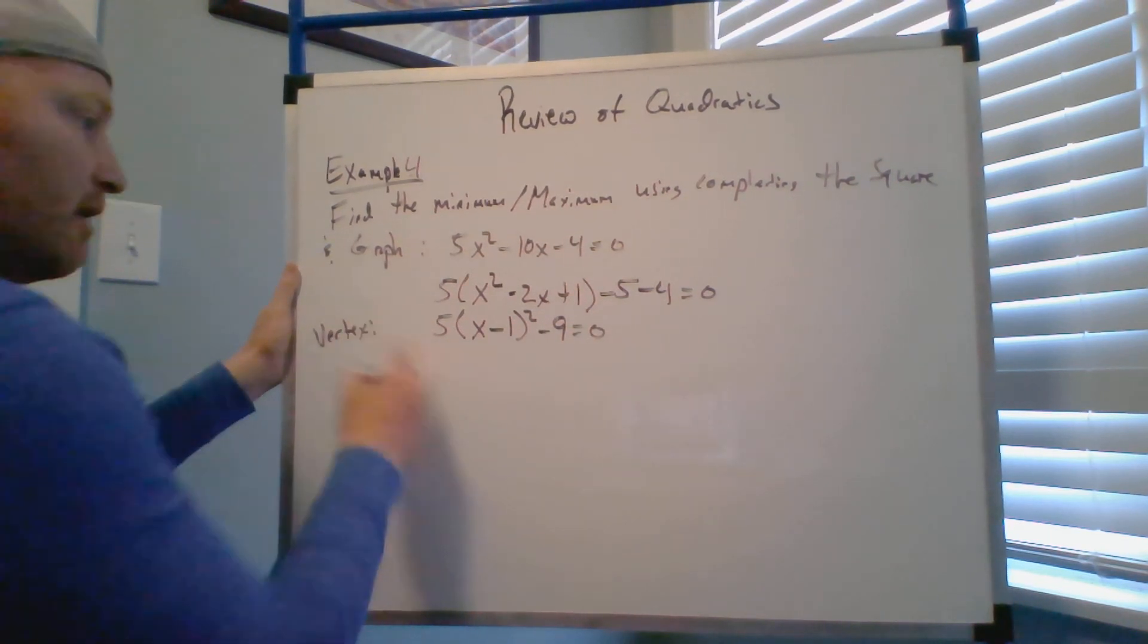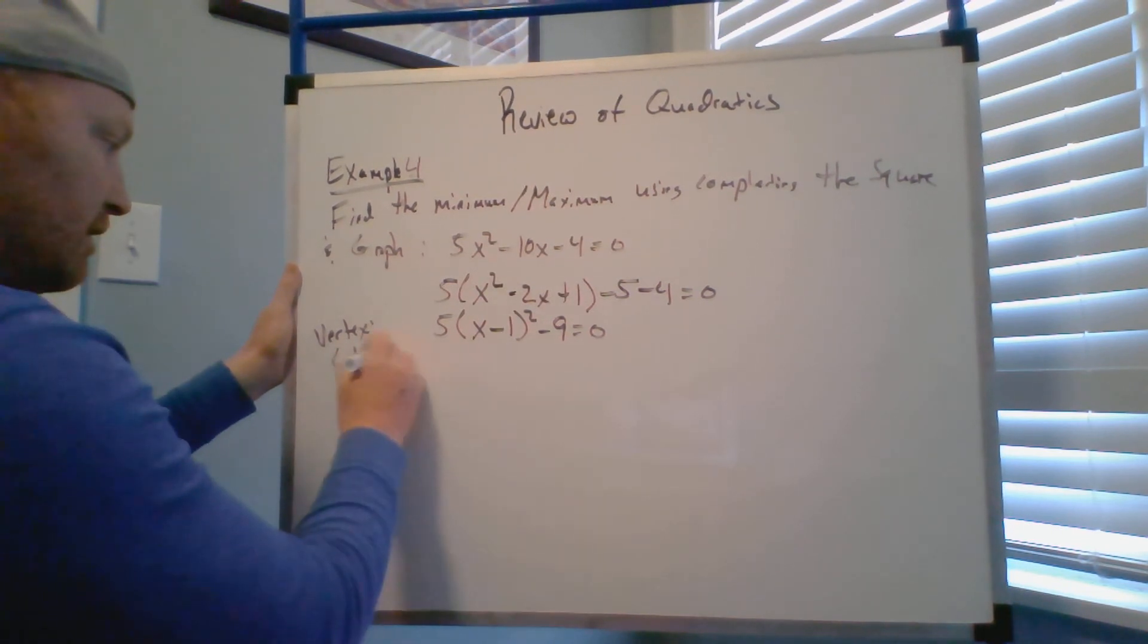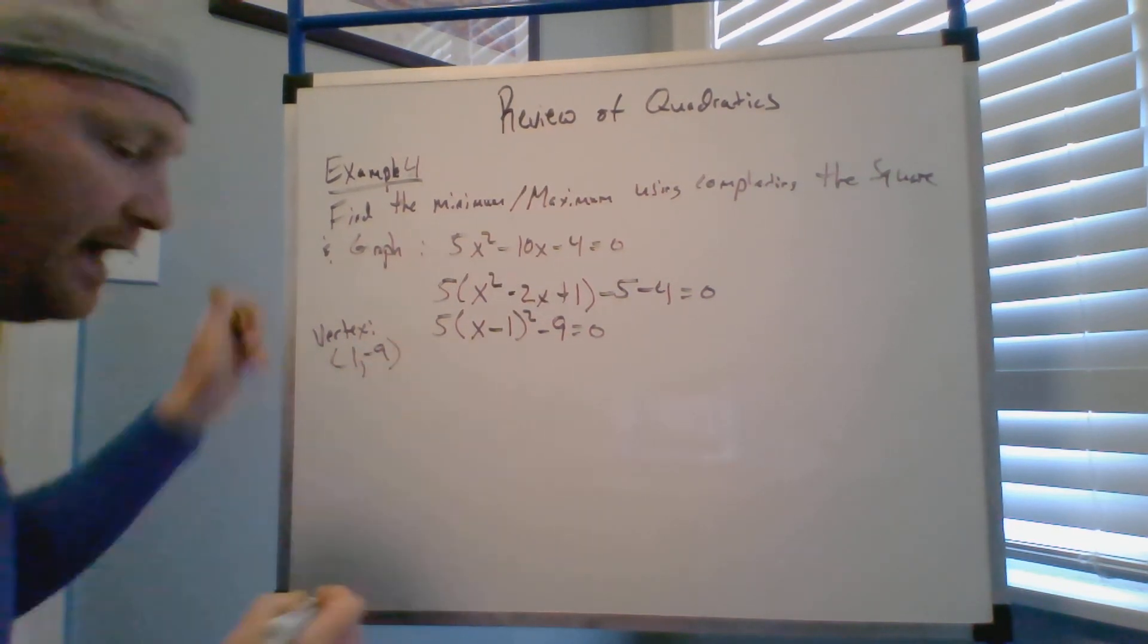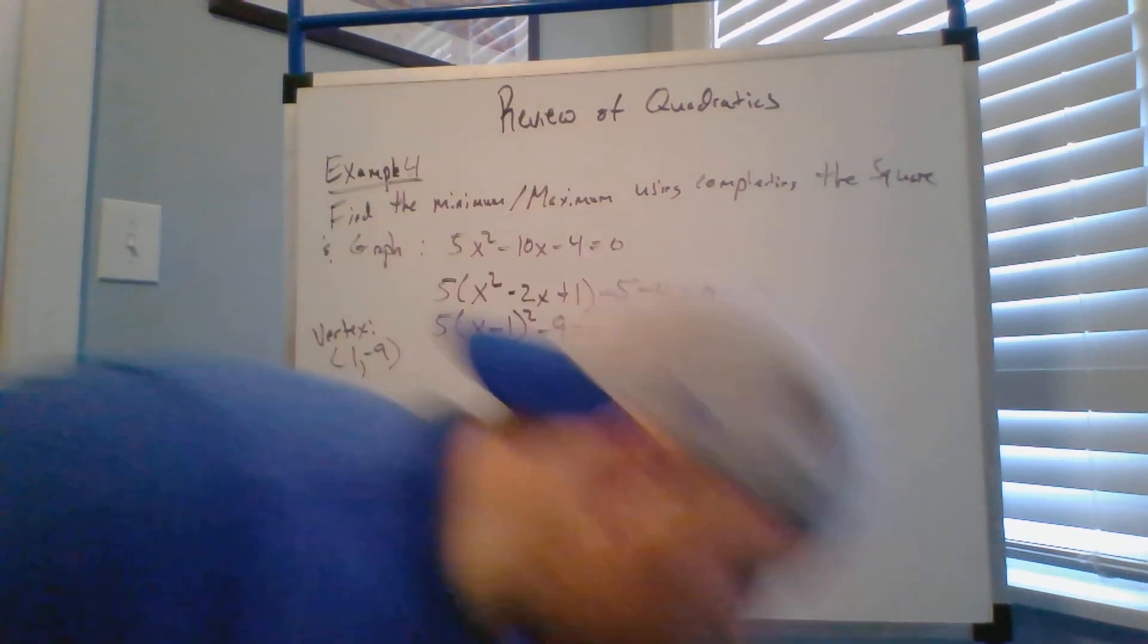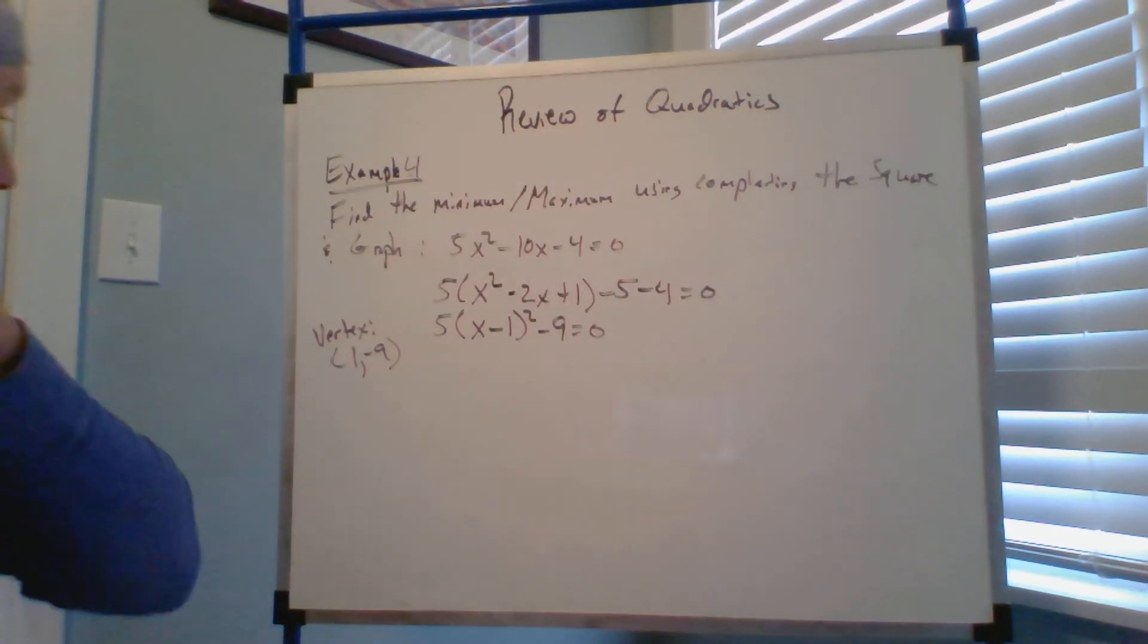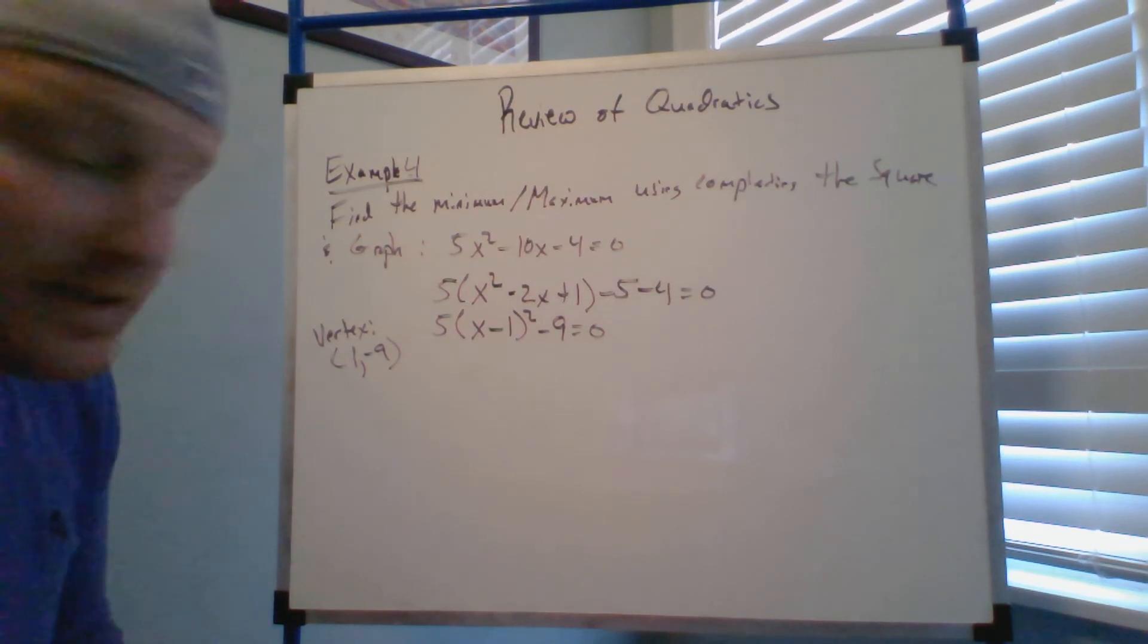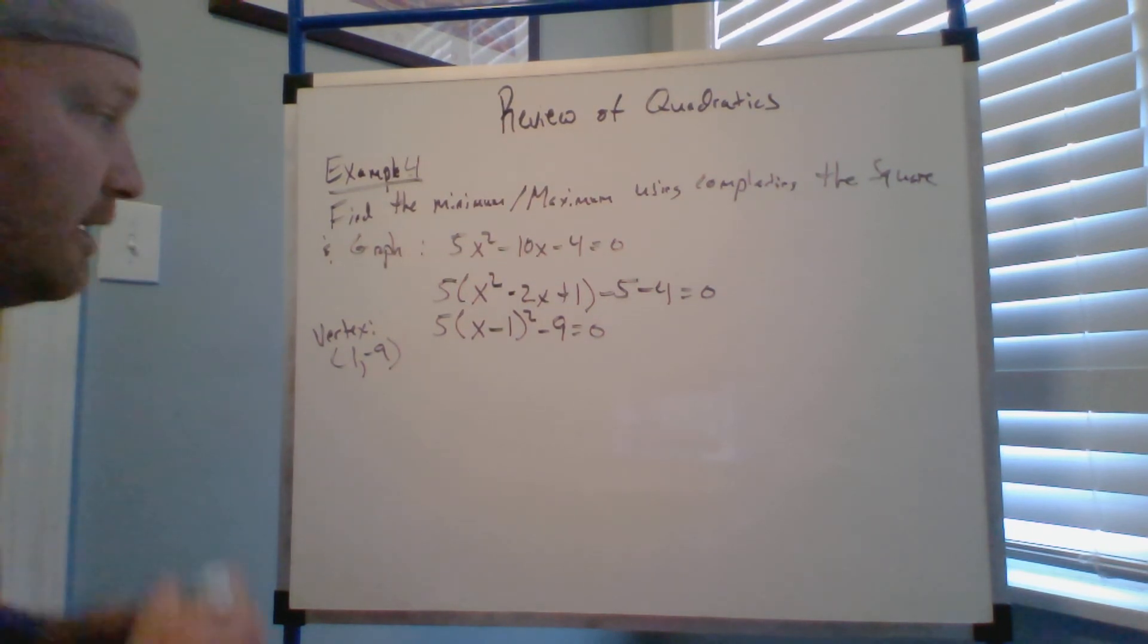So we've identified our vertex, the opposite of this, which is one comma negative nine. Now let's go one step further and let's now solve for the solutions, for the potential x-intercepts if they have any.